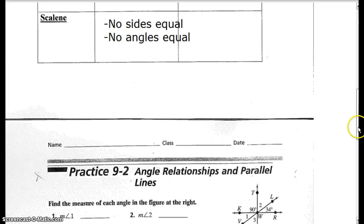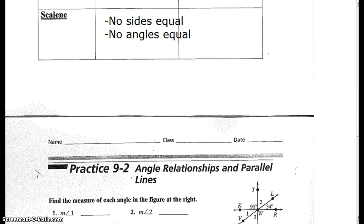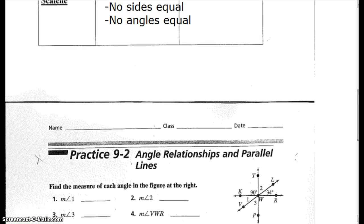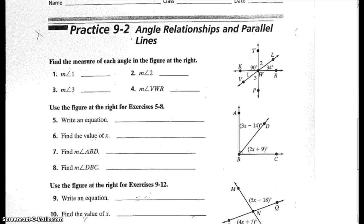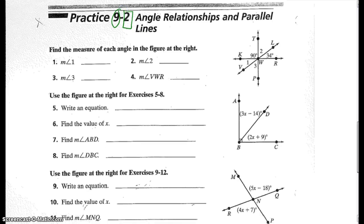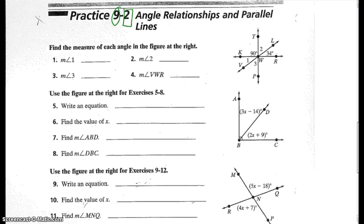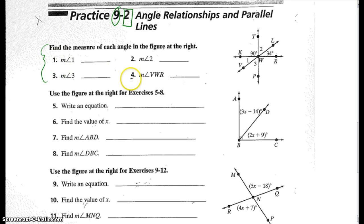Alright, we're going to go to the back side of this worksheet, which is practicing angle relationships and parallel lines. This can be found in Chapter 9, Section 2 in the textbook. So if you don't have time to watch this entire video and you want a little review, you can go ahead and read the sections there. We're not covering all the vocabulary there, but we did cover one of the vocabulary words by looking at problems 1 through 4, and that was vertical angles.